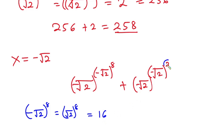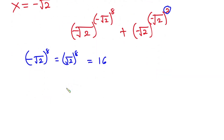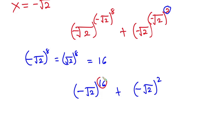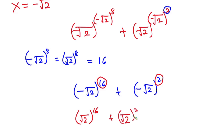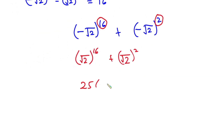Since the exponent is even, it makes this one positive as well. Everything becomes negative square root of 2 to the power 16, plus negative square root of 2 to the power 2. Since the powers are even, these equal square root of 2 to the power 16 plus square root of 2 to the power 2, which gives 256 plus 2, also equal to 258. So our final answer for this problem is 258.